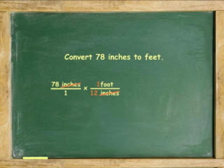Four, cancel the name of the given units. Multiply and divide to get the answer. 78 times 1 is 78, 1 times 12 is 12. 78 divided by 12 equals 6.5 feet, which are the units left in the proportion.